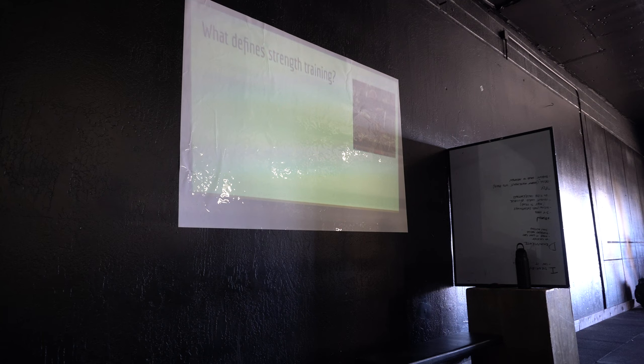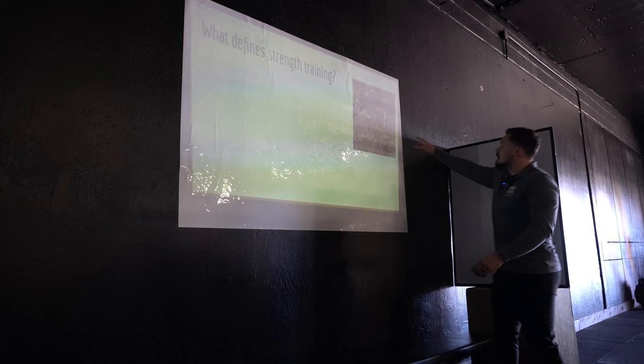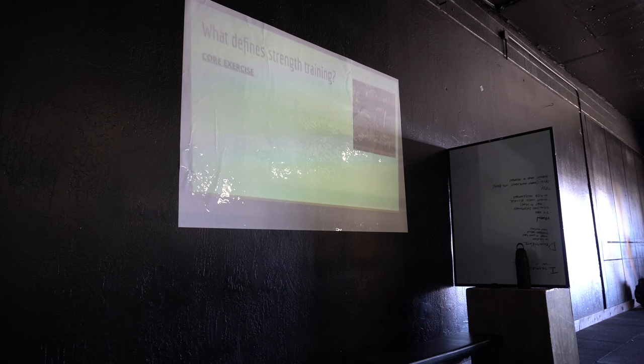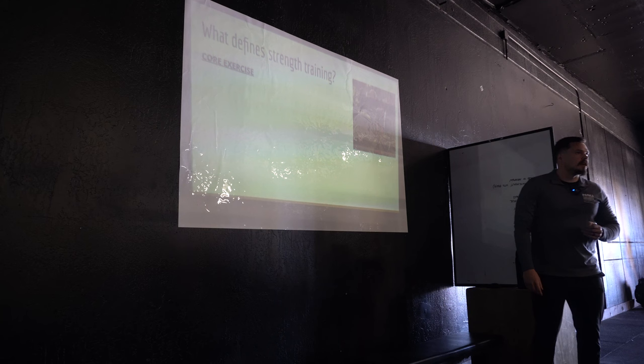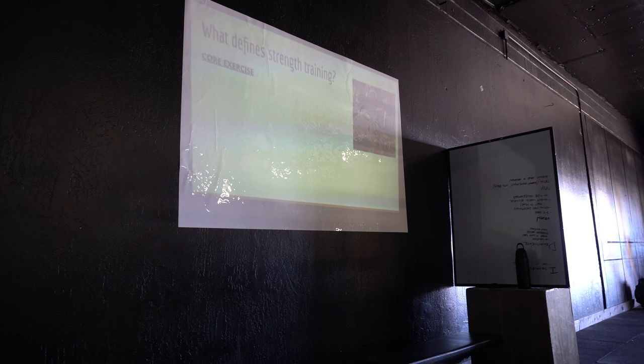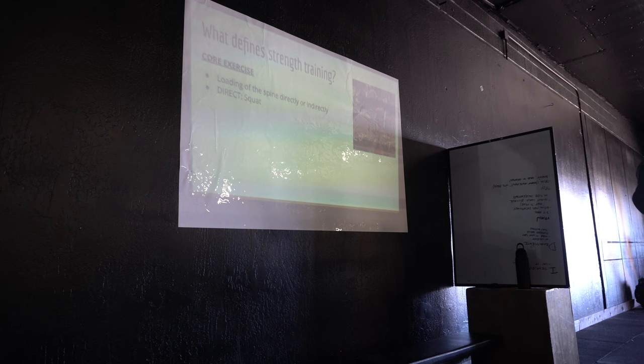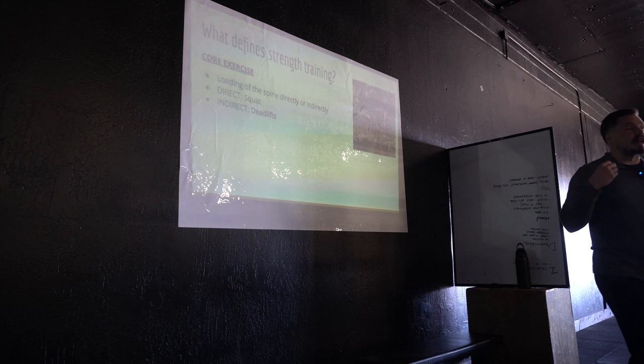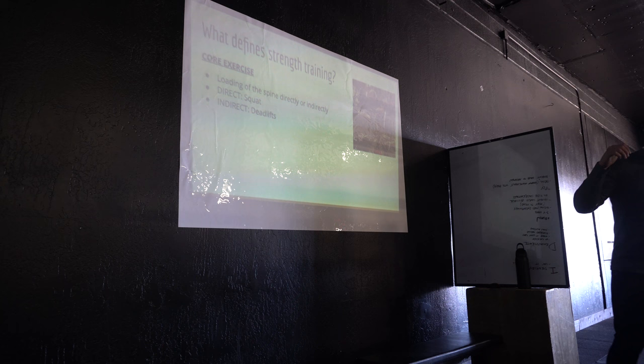What defines strength training? Core exercise. When I say core exercise, I don't mean sit-ups or planks. Core exercise is defined as loading your spine either directly or indirectly. Directly would be the squat — axially loading the spine — that is a core movement for strength progression. Indirectly would be something like deadlifts, hang cleans, or power cleans — not directly on top of the spine, but you still need your trunk musculature contracted to complete the lift successfully. This doesn't mean we can't do accessory lifts — accessories are still very important for strength training, just as with hypertrophy — but our primary focus should be on these core exercises.